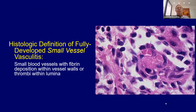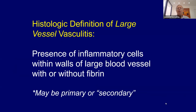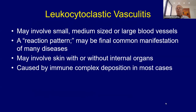The histologic definition for a fully developed small vessel lesion of vasculitis: you need fibrin deposition within the blood vessel wall, or thrombosis within the lumen, or both. That's how we histologically diagnose small vessel vasculitis in a fully developed stage. For a larger blood vessel, if there's inflammation in the wall even without fibrin, that means it's inflamed — primary or secondary. We'll show some examples of those.